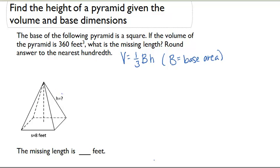So if I look down at the picture, it looks like my missing length is height. That's what we're solving for. And the dimensions of my square are 8 feet by 8 feet, which means the base area is going to be 64 feet squared.